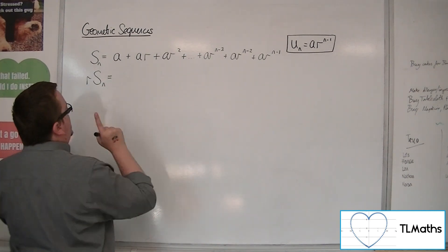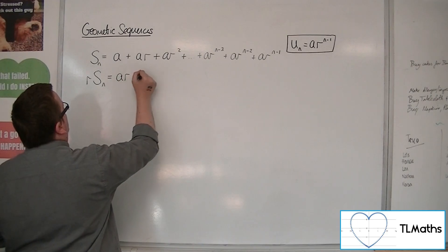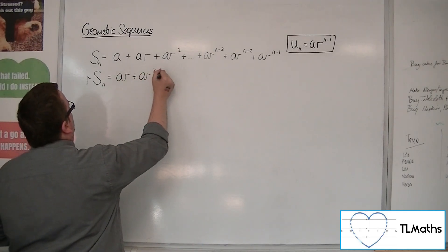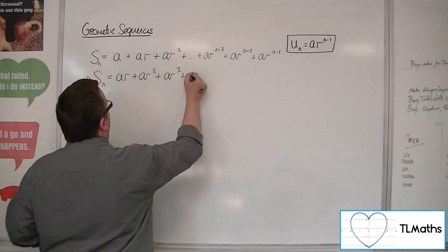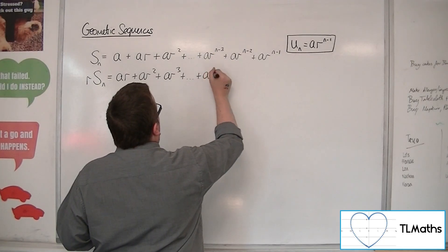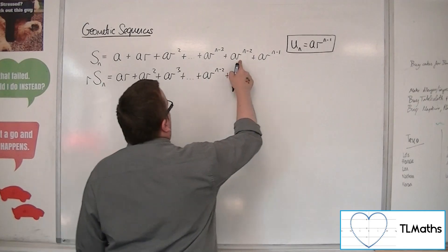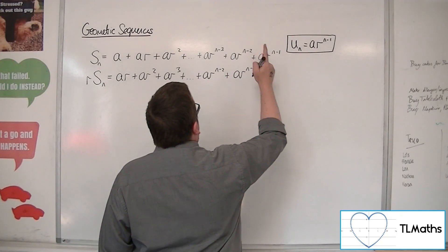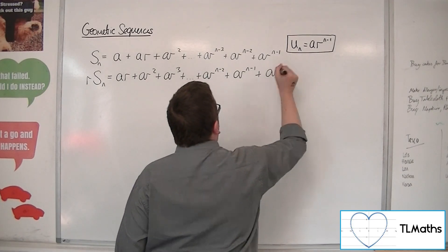Multiplying every term by r, I get ar times ar, so ar. ar times ar is ar squared. ar squared times ar is ar cubed. ar to the n minus 2, ar to the n minus 2 times ar is ar to the n minus 1, and finally ar to the n minus 1 times ar is ar to the n.